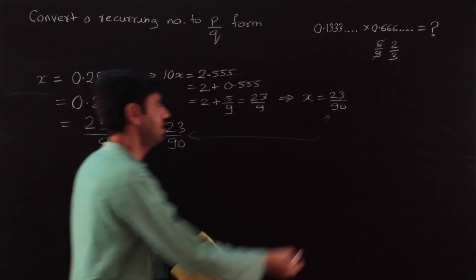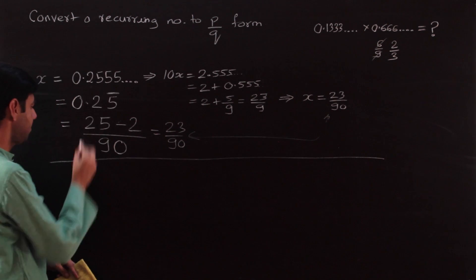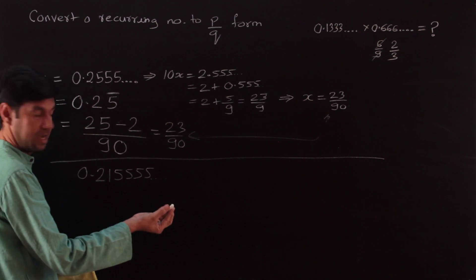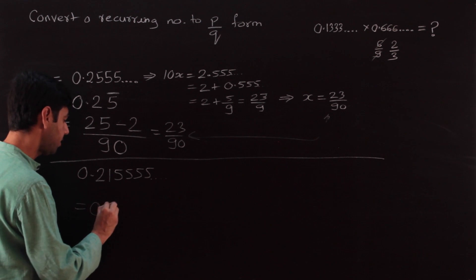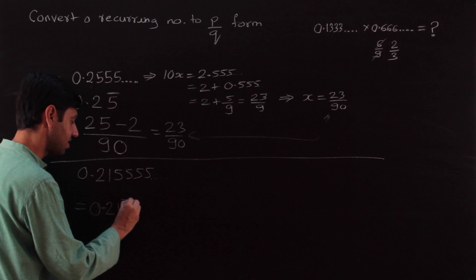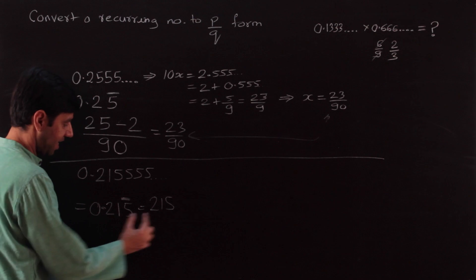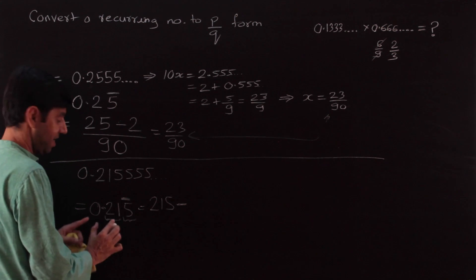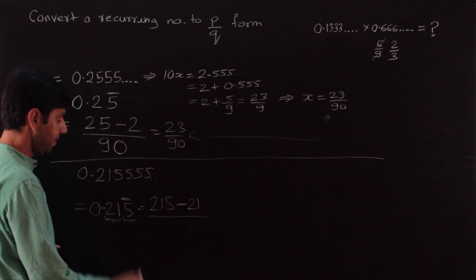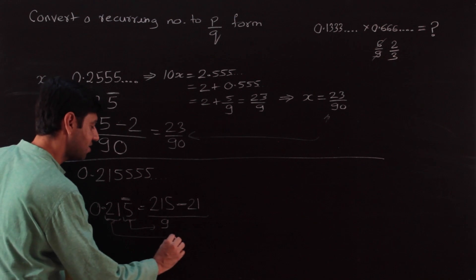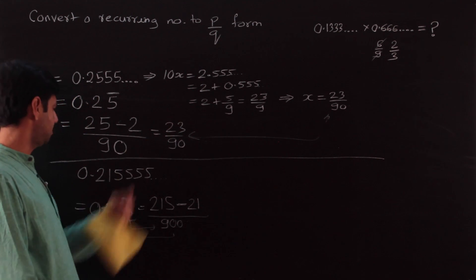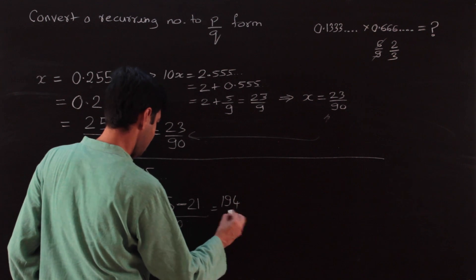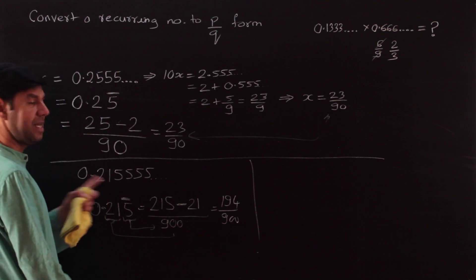Let's do examples. For 0.21555...: 0.21 is the non-recurring part, 5 is recurring. Write 215 once, subtract 21, giving 194. Denominator: one recurring digit → one 9; two non-recurring digits → two zeros → 900. So the answer is 194/900.